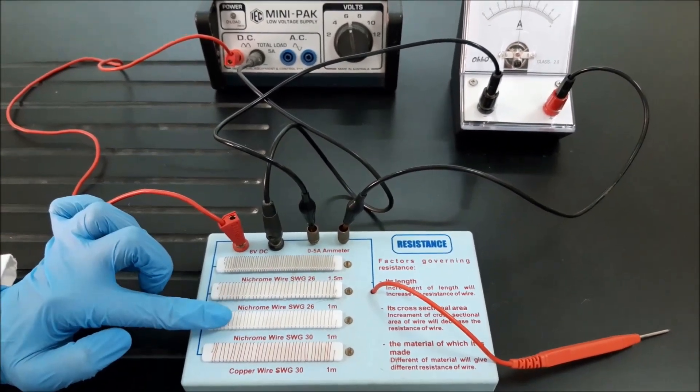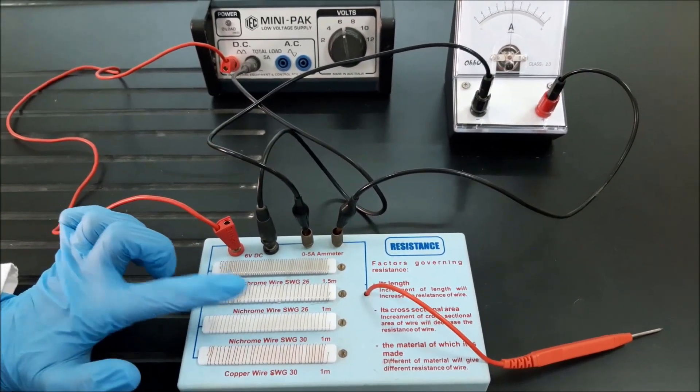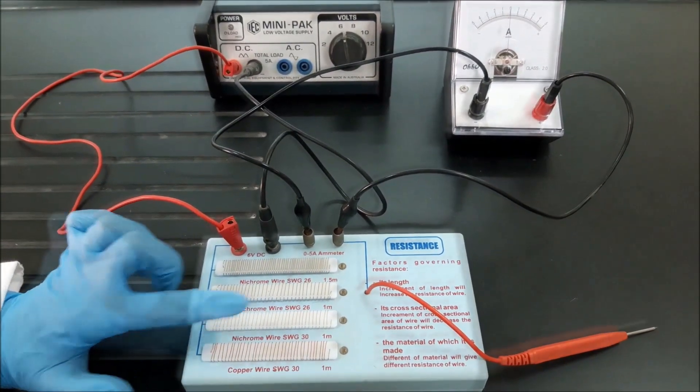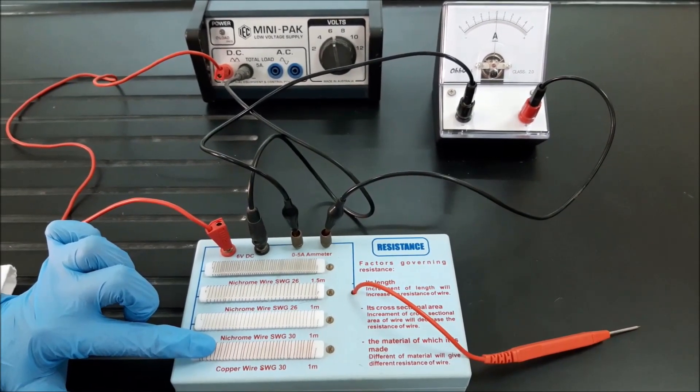This one is Nichrome wire SWG30, 1 meter long. And the copper wire, SWG30, 1 meter long.